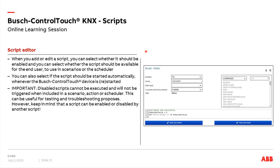Back to the myBuildings portal and the script editor. When we click the 'Create New Script' button, the script editor opens for the first time with three parts: main settings on the top left, the command box, and the editing field where we enter commands and comments. In the basic settings, we can activate or deactivate the script, give it a name, decide if it should start automatically when the Control Touch restarts, decide if it should be available in scenes and time switches for the end user, and select the script type — native or Lua.